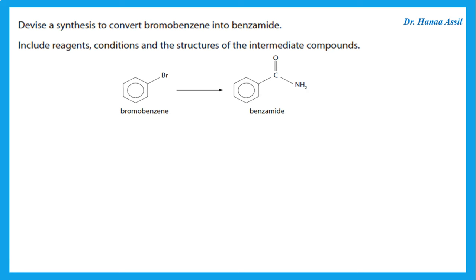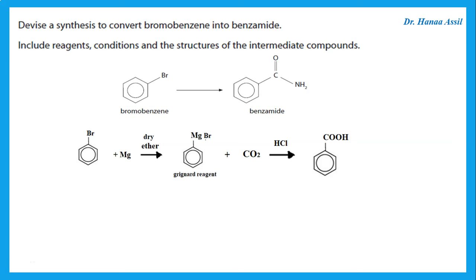Starting from bromobenzene, we need to add an extra carbon. We can make the Grignard by reacting bromobenzene with magnesium in dry ether to give the Grignard reagent. Then we react with carbon dioxide, followed by HCl, to give benzoic acid.